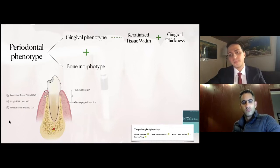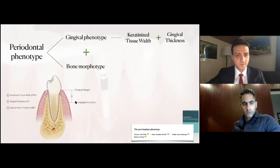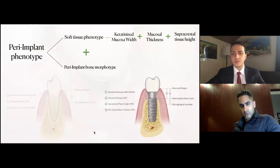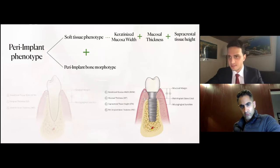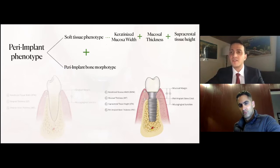A commentary published in the Journal of Periodontology by Dr. Gustavo Avila-Ortiz and other authors nicely demonstrates the periodontal phenotype components: keratinized tissue width from the mucoginival junction to the gingival margin, the thickness of that tissue as the horizontal aspect, and the thickness of the buccal plate giving you the bone morphotype. When we look at implants, we have an additional critical component — the height of that soft tissue — called the supracrestal tissue height.